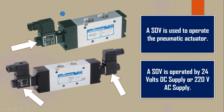The upper solenoid is known as a single coil solenoid because it has only a single coil, and the lower solenoid is known as a double coil solenoid because it has two coils. In the single coil solenoid, when supply is given it will open the valve, and when supply is not given it will close the valve. In the double coil solenoid, separate coils are used to open and close the valve.